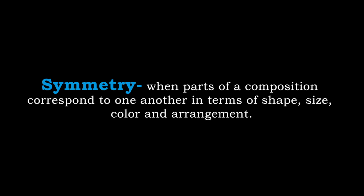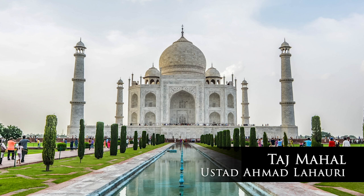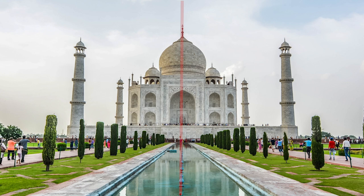Now let's explore some artworks where balance is achieved through symmetry — the relationships from one part of a composition to the other. Symmetrical balance is when parts of a composition correspond to one another in terms of their size, shape, color, or arrangement. The Taj Mahal and the pool that leads up to it are a great example of symmetrical balance along the dividing line.